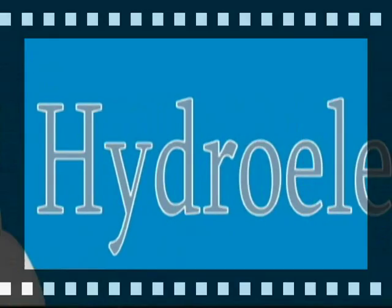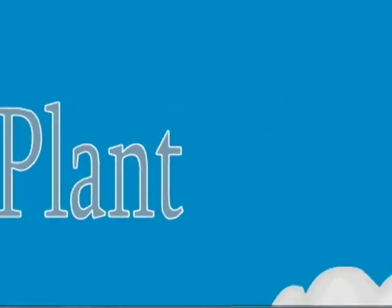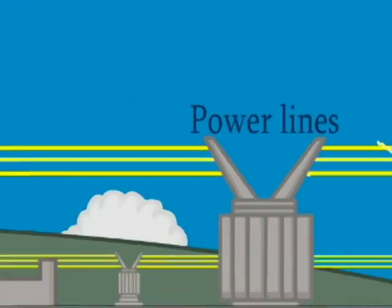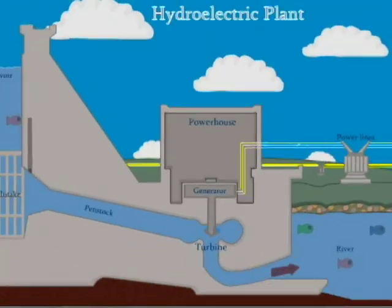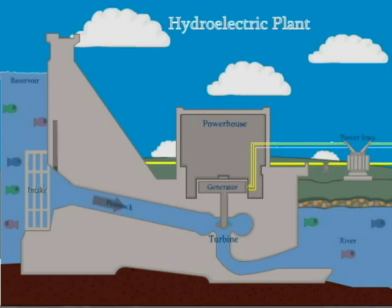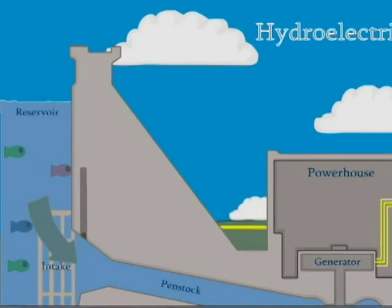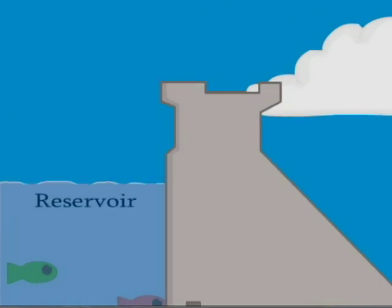I'm going to tell you how a hydroelectric plant works. Here's a diagram of a hydroelectric plant, but it's more commonly known as a dam. Shown on the left side of the diagram, you have what is called a reservoir, which is another name for lake.